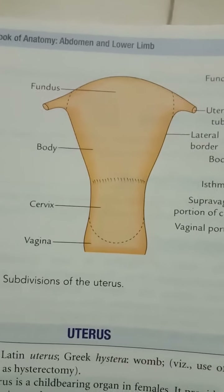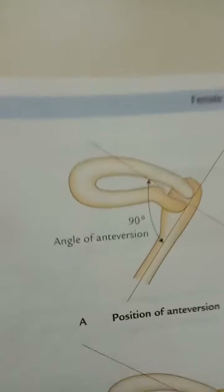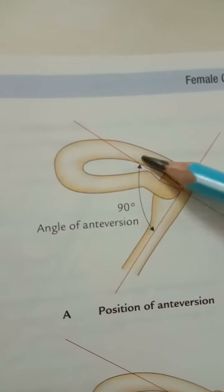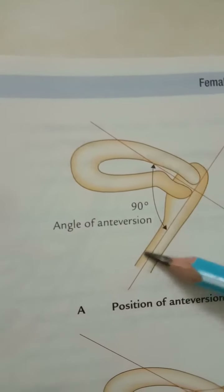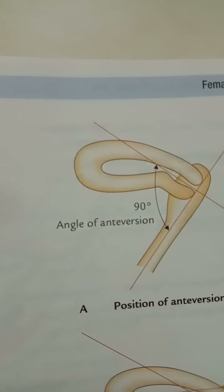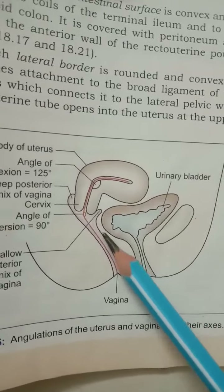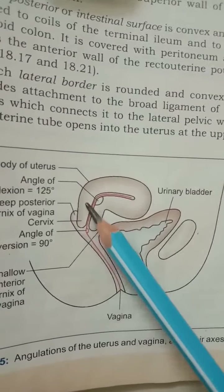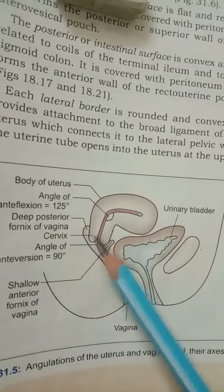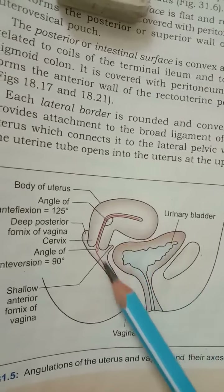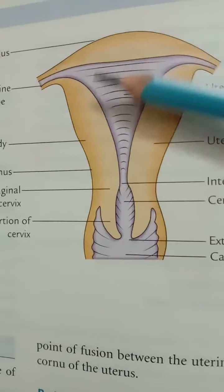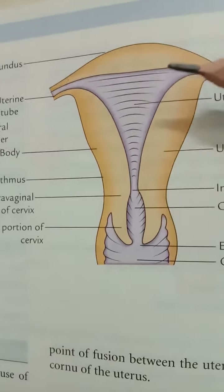This normal position of the uterus is called the anteverted position. In this diagram, you can see it forms approximately a 90-degree angle with the vagina. In another diagram, the urinary bladder is visible, and the uterus is adjacent to it — this is the anteverted position of the uterus.